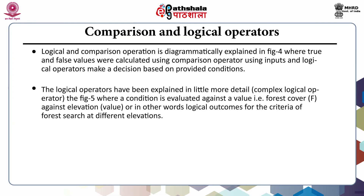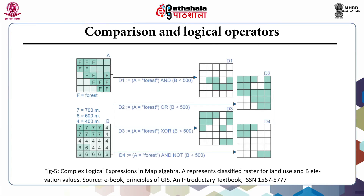The logical operators are explained in more detail in the next figure showing complex logical operators, where a condition is evaluated against a value — that is a forest cover (shown as F) against an elevation value — in other words, logical outcomes for the criteria of forest search at different elevations. Here A represents a classified raster for land use and B represents the elevation values; accordingly the logical outcome for the criteria of forest search at different elevations can be found in the output.